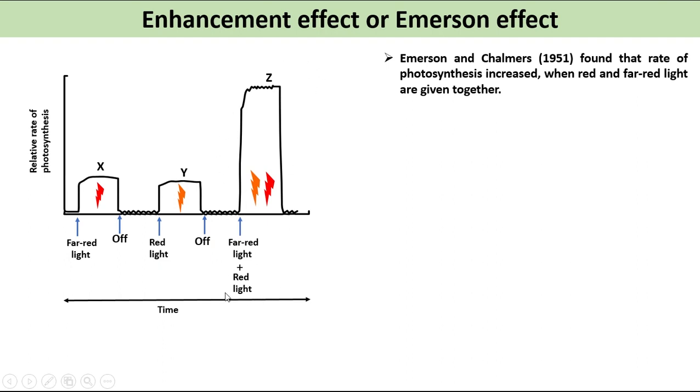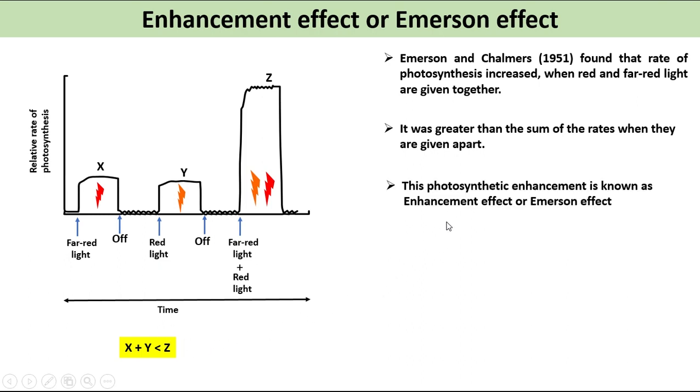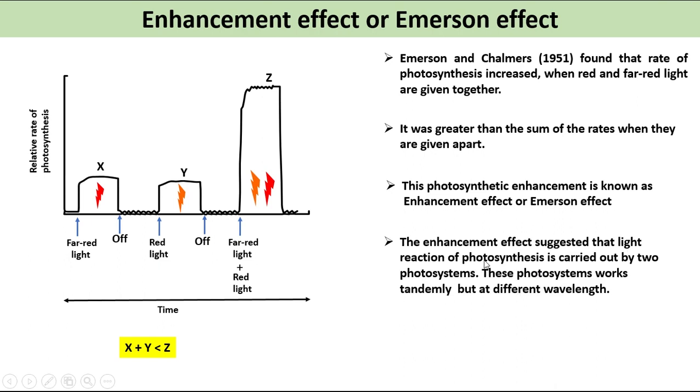Rate of photosynthesis in far-red light is X and in red light is Y, while photosynthetic rate is Z in combination of red and far-red light. It was greater than the sum of the rates when they are given apart. This photosynthetic enhancement is known as enhancement effect or Emerson effect. The enhancement effect suggested that light reaction of photosynthesis is carried out by two photosystems. These photosystems work tandemly but at different wavelengths.